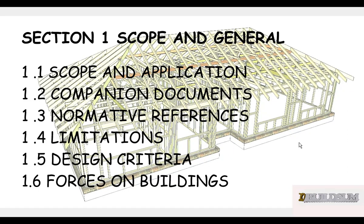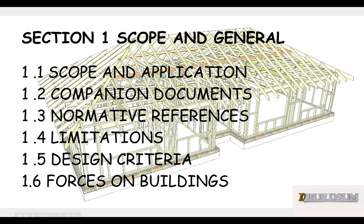The code is broken up into a few different sections. The first one being scope and general — so it covers what the actual code covers, it looks at any companion documents and anything that was referenced to get the information for this document. It also looks at limitations, what it doesn't cover and how far it does cover. I'll look at that in a separate presentation.